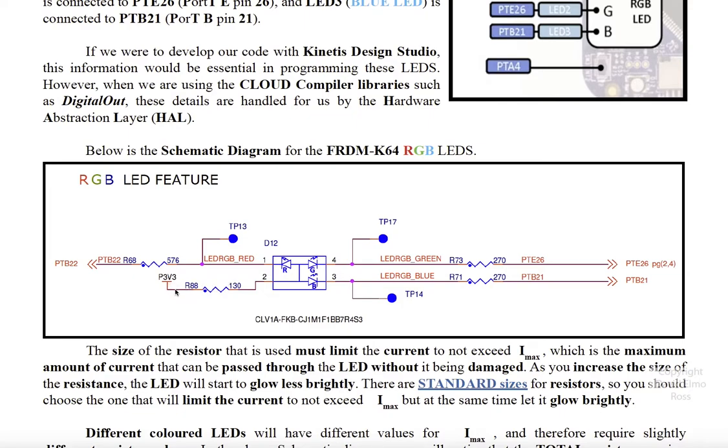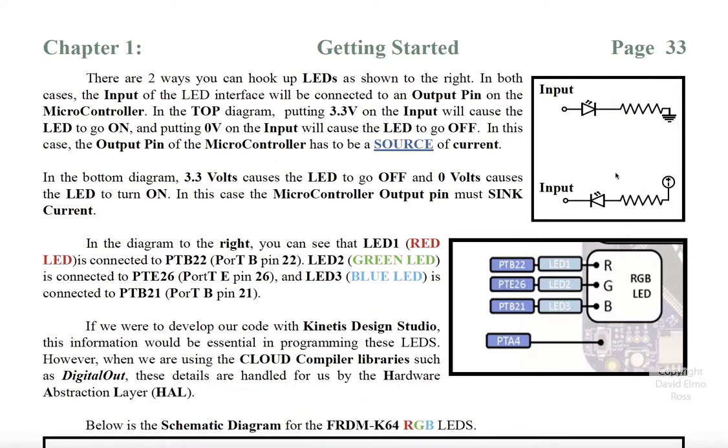But let's take a look and see which of the two types of LED interfaces we have here. Notice this is 3.3 volts going through here to our LEDs, and then our LEDs are connected up to our microcontroller port pins. What that means is that we have the second interface here. The 3.3 volts, or one, turns it off, and a zero turns it on.